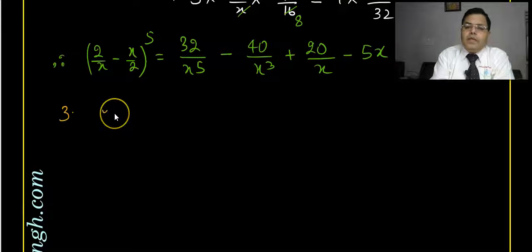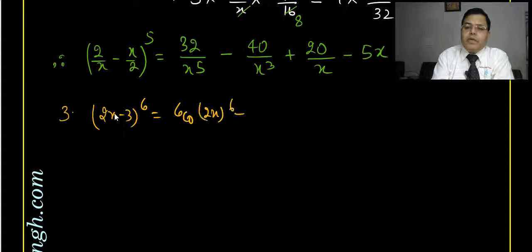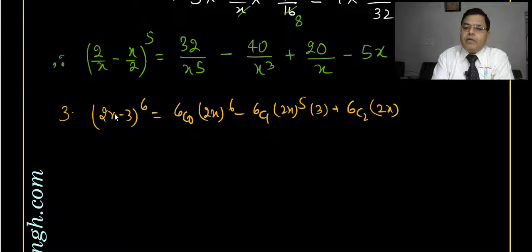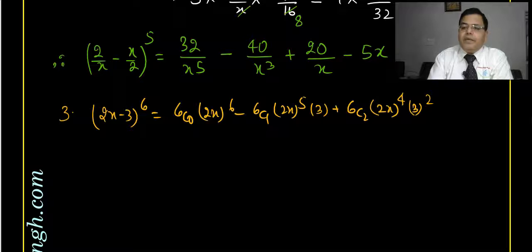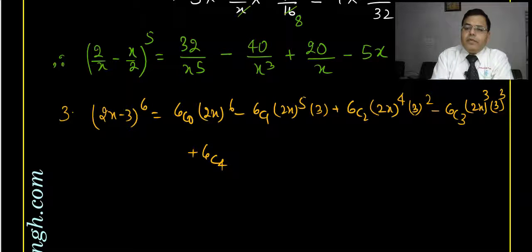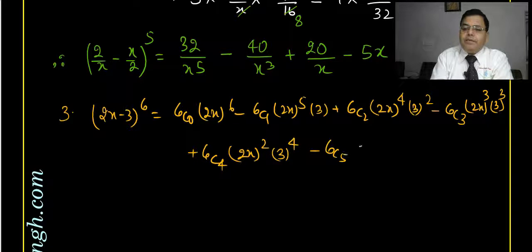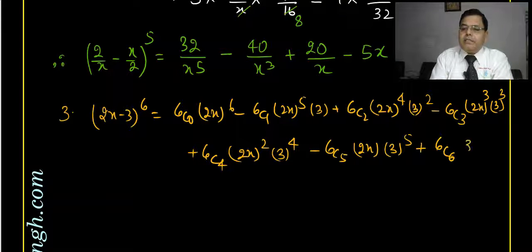The third question is 2x minus 3 whole to the power 6. That can be written as: 6C0 times 2x to the power 6, minus 6C1 times 2x to the power 5 times 3, plus 6C2 times 2x to the power 4 times 3 squared, minus 6C3 times 2x cubed times 3 cubed, plus 6C4 times 2x squared times 3 to the power 4, minus 6C5 times 2x times 3 to the power 5, plus 6C6 times 3 to the power 6.